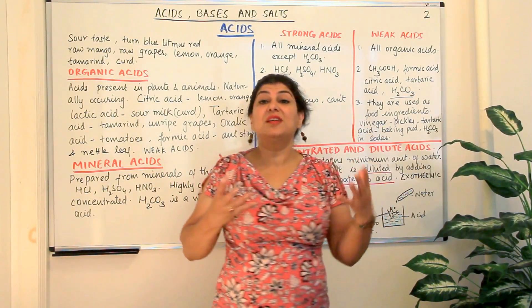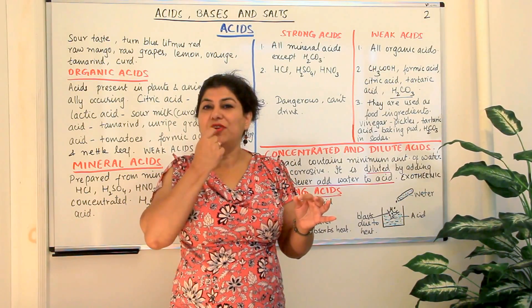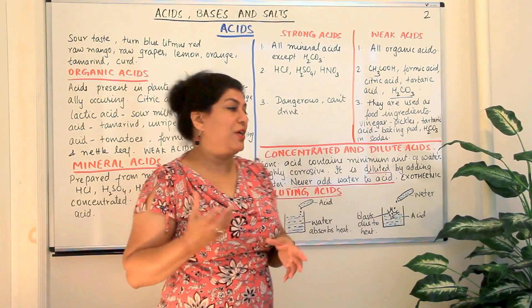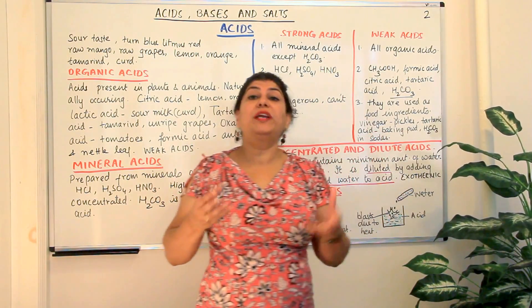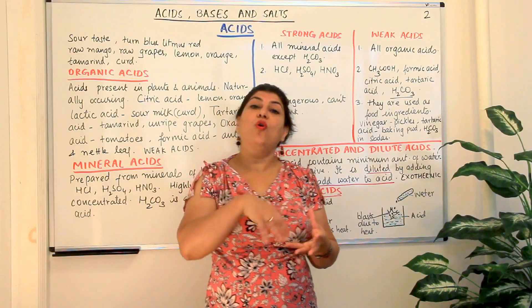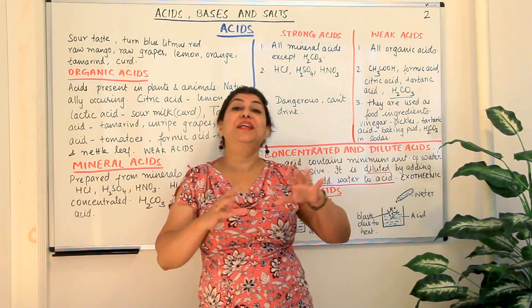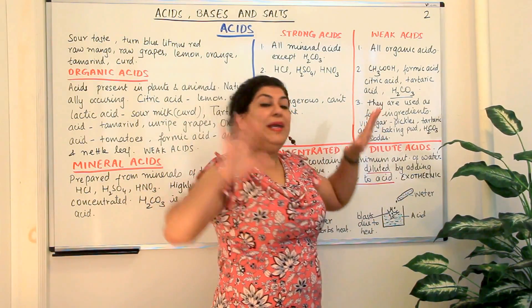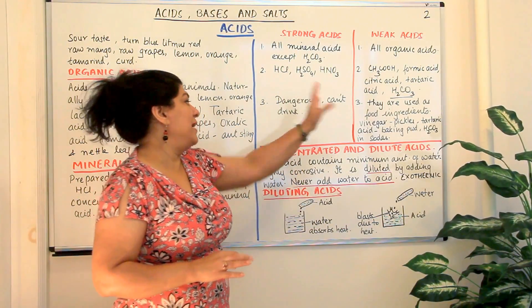Tartaric acid is present in baking powder and do you know there is the little sour taste that you have in baking powder is because of the tartaric acid. Then you have carbonic acid. Carbonic acid is added to the sodas, your coke, Fanta. The fizz that comes out is because of the carbonic acid which releases the carbon dioxide and gives you the fizz. So we can this first way classify acids into strong acids and weak acids.